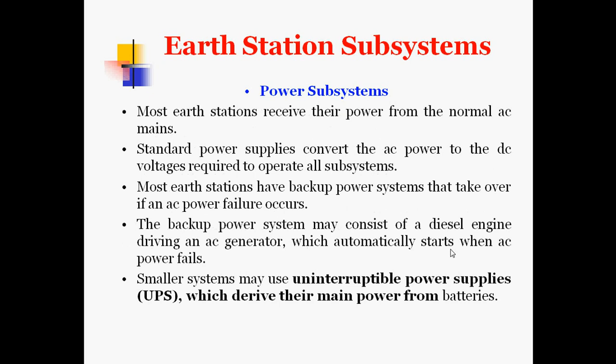The power subsystem is used to drive all other subsystems and is the most important subsystem in the earth station. Most earth stations receive their power from normal AC mains, and standard power supplies convert AC power to the DC voltages required to operate all subsystems. Most earth stations also have backup power systems that take over if an AC power failure occurs — this may consist of a diesel engine driving an AC generator that automatically starts when AC power fails. Smaller systems may use uninterruptible power supplies (UPS) that derive their main power from batteries.